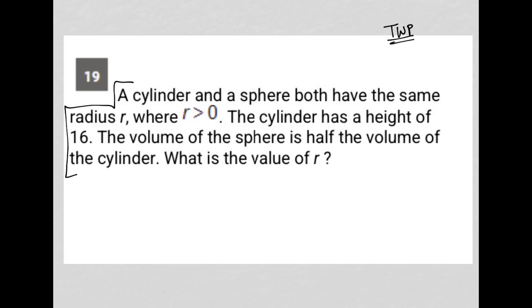The first sentence here says a cylinder and a sphere both have the same radius R, where R is greater than zero. So I'm going to notate that by saying R_C, which is radius for cylinder, is equal to R_S, which is radius for sphere.